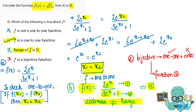Now we check whether the function is bijective. Bijective means it must be both one-to-one and onto. It is one-to-one — we have verified that. But it is not onto, because onto means the co-domain equals the range. Since the co-domain is all real numbers but the range is only positive reals, the function is not onto and therefore not bijective.